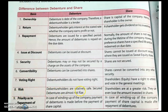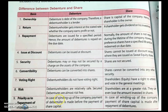Regarding risk: debenture holders are relatively safe, and secured debentures are almost risk-free. Shareholders are at greater risk and can even lose the amount invested. Regarding priority of repayment of principal: in case of winding up of the company, payment to debenture holders is made before the payment of share capital — debenture holders, being lenders, receive payment first, and shareholders receive payment only after.